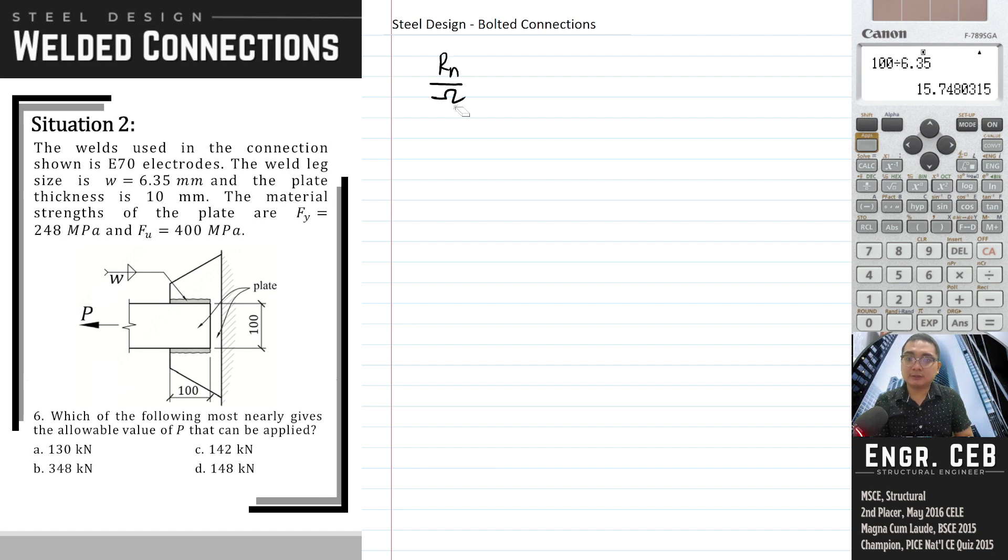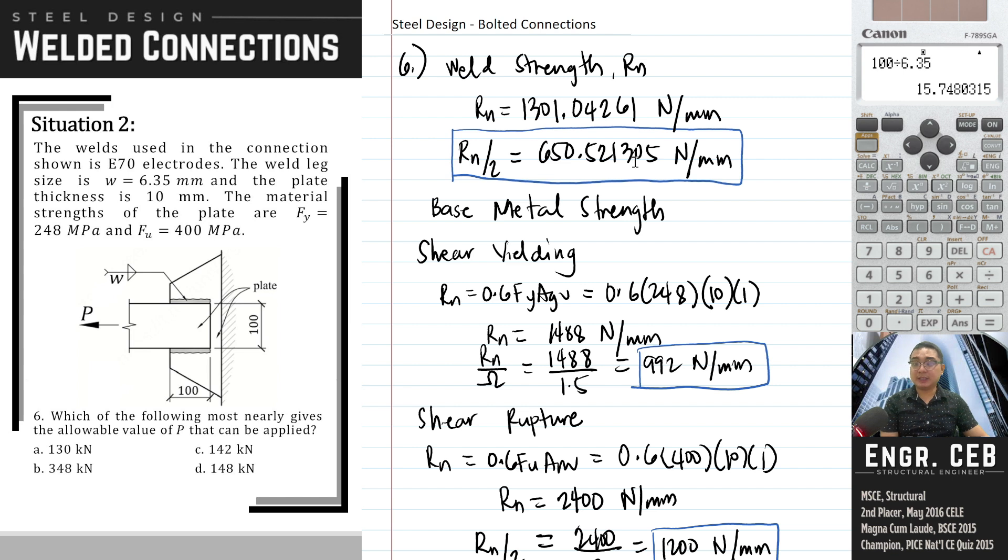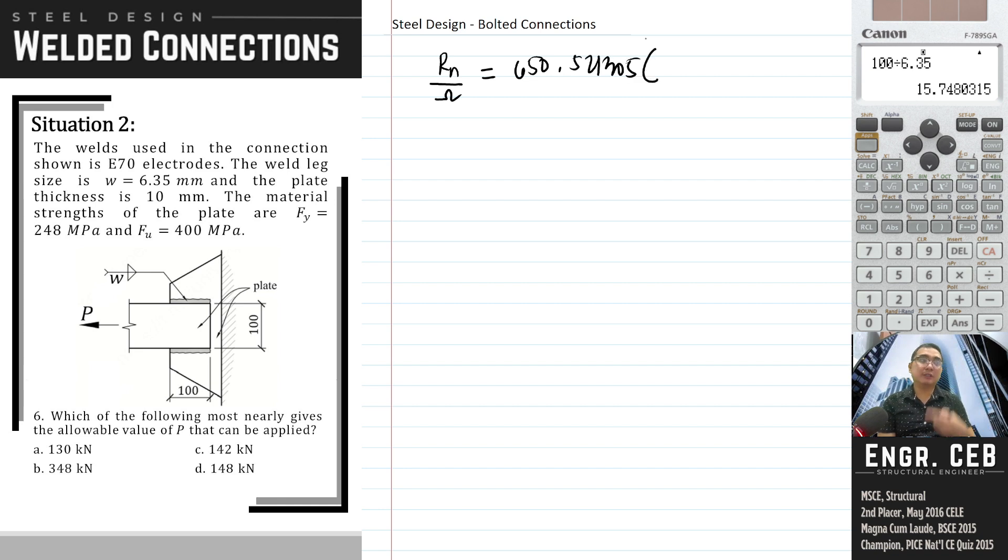So we can now compute the capacity based on weld strength. That is R sub n over factor of safety. Let's compute the strength of weld per unit length, that is 650.521305. Be careful, this is already divided by the factor of safety. Don't divide again or it will be doubled. So take note, this is already divided by factor of safety. Just multiply this by the length of the weld, because this is the strength per 1mm length of weld. How strong is it if it has a leg of 100? Just multiply. Then don't forget to multiply by 2 because there are two welds with 100mm length. Therefore, the capacity based on weld strength is 130,104.261 Newtons. In kilonewtons, this is 130.104.